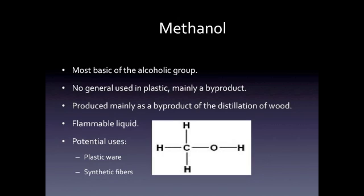Methanol, CH3OH, is not only the most basic compound in the alcoholic group, but also the most useful. It is produced naturally by the metabolism of bacteria, and also by the destructive distillation of wood. Methanol is found naturally in biomass, coal, waste, etc.